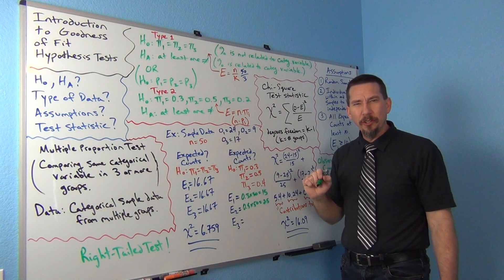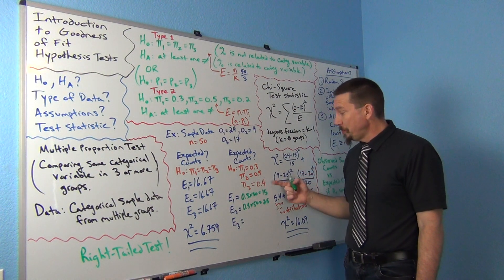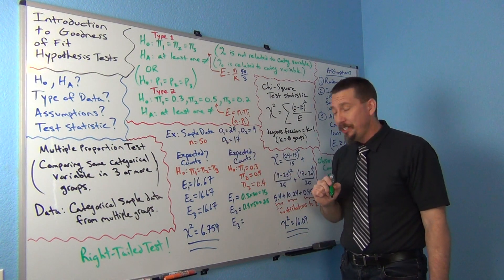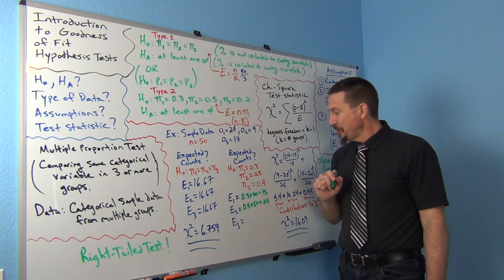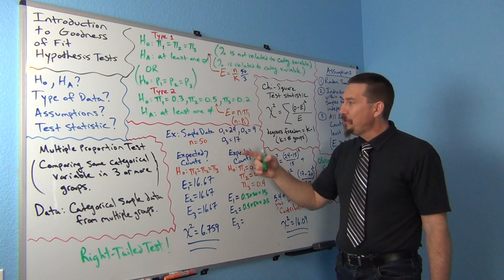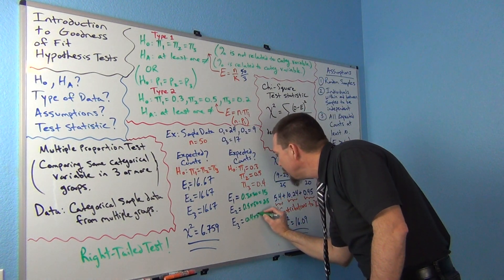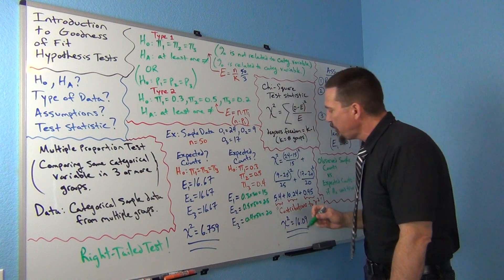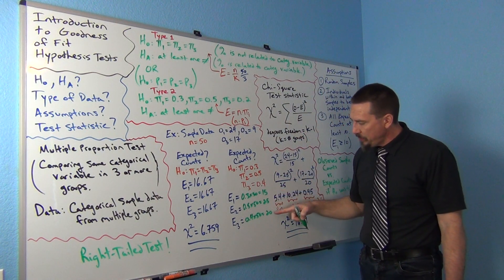So I'm just multiplying, I'm kind of using that old taking a percent of a total, right, or multiplying the proportion times the total, something we covered at almost the very beginning of our time together. So 0.4 times 50 would give us 20, so my expected counts would be 15, 25, and 20.